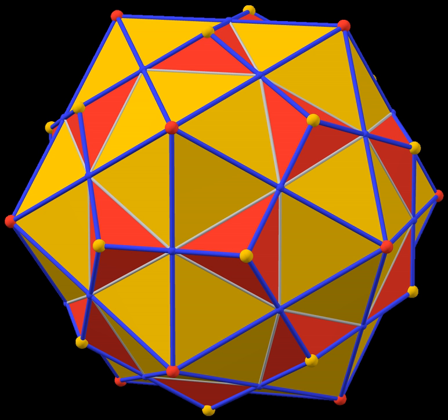Root systems are special sets of Euclidean vectors. A root system is often identical to the set of vertices of a regular polytope.